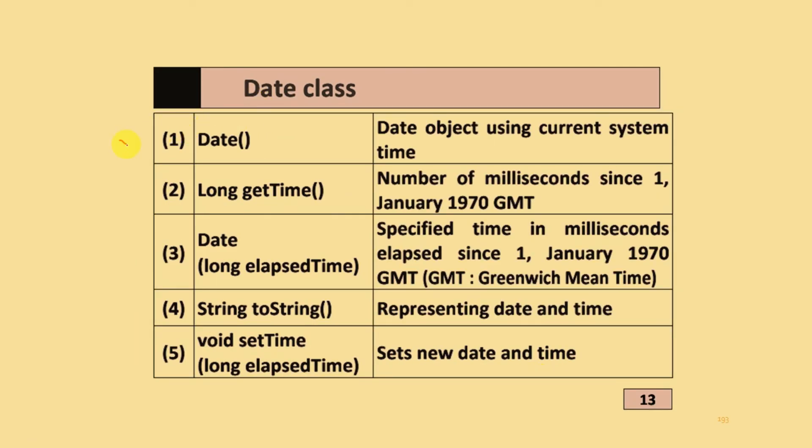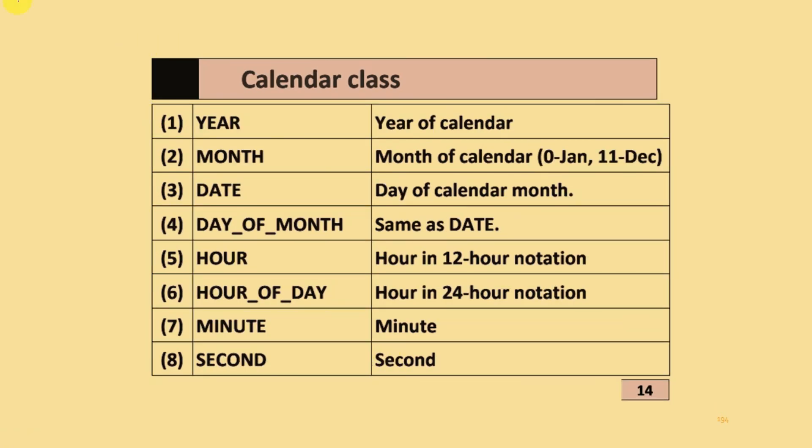Date class: First, Date() creates date object using current system time. Long getTime() returns number of milliseconds since 1 January 1970 GMT (Greenwich Mean Time). String toString() represents the date and time. Void setTime() sets new date and time.